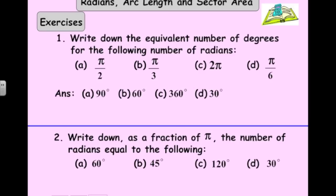These are all really good ones to know off by heart. Going the other way around, 60 degrees, pi over 3. 45 degrees is pi over 4. 120 degrees is 2 times 60. So 2 pi over 3 and 30 degrees, pi over 6.